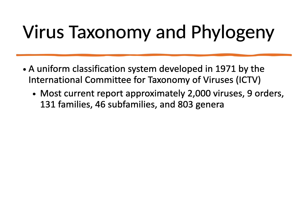With classification of viruses, there are universal uniform classification systems, first developed in 1971. There are different systems, and we'll be looking at one system in particular that the textbook references — one that is very popular and looks at the genome. There are currently approximately 2,000 viruses that can be put into nine different orders, branching out to 131 families, with sub-families and then genera.